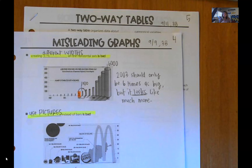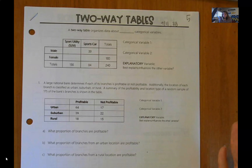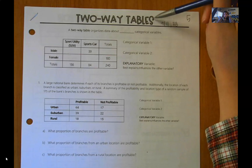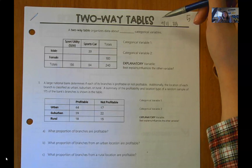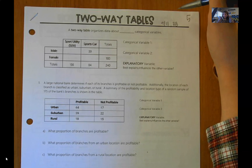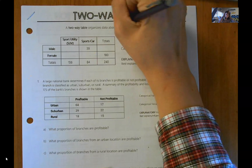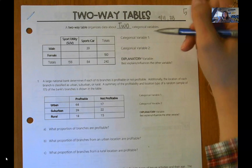Two-way tables technically aren't a graph — they're a table — but you can think about them as a graph. We did misleading graphs before this because I wanted everything to go in an order that makes sense. We've talked about the types of data, the two ways you can graph categorical data, how you can misrepresent that data, and now we're talking about the last way to organize categorical data: the two-way table. I love two-way tables — I think they're one of the most interesting things in statistics.